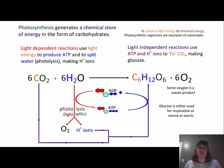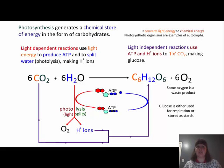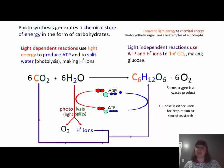The first thing we need to remember from 9th grade biology is that photosynthesis generates a chemical store of energy in the form of carbohydrates. This is how plants and other autotrophs convert light energy into chemical energy — we take light from the sun and use it to make sugar and oxygen. We have two different reactions used together: a light dependent reaction, which uses light energy to produce ATP and to split water to make hydrogen ions.